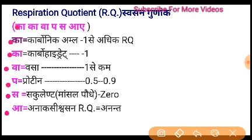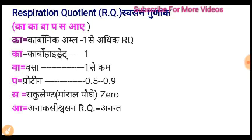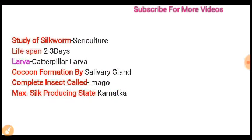We can use this as: 1, then 1, then 1, then 0.5 to 0.9, then the succulent is zero, and then the growth is the most important part of the silkworm.